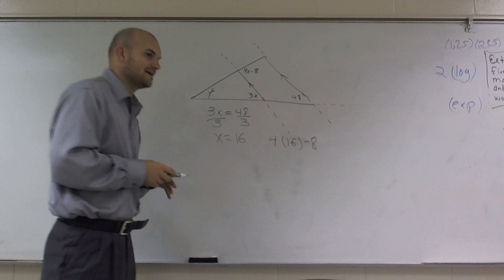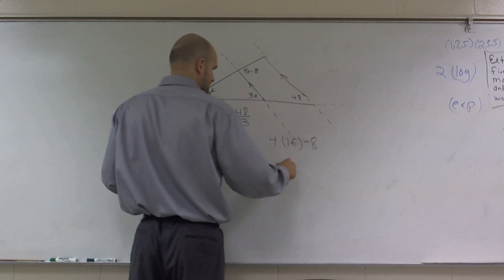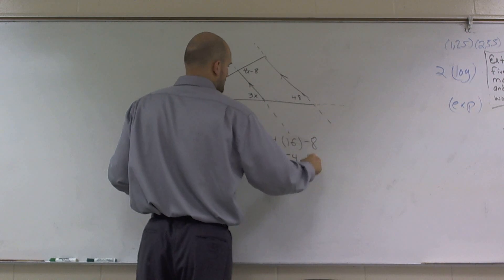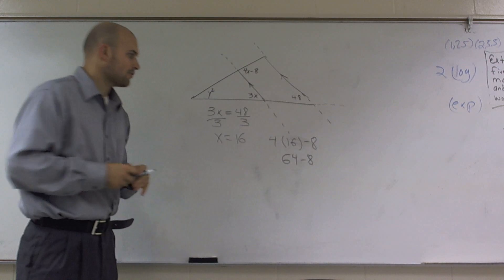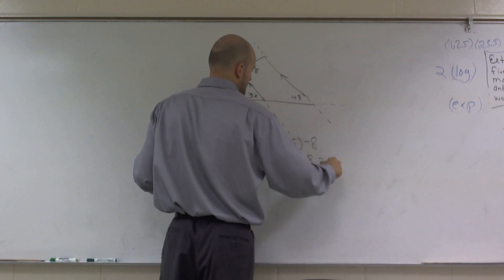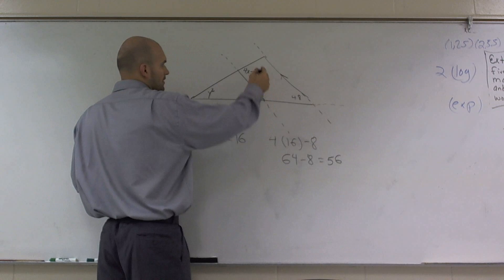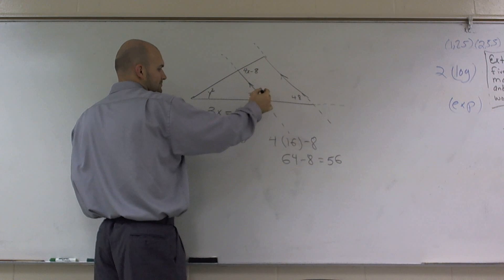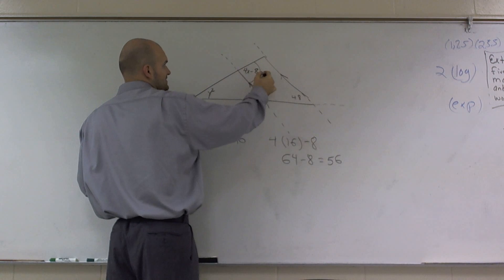Well, so 4 times 16 is going to be 64 minus 8. 64 minus 8 is going to give me 56. So therefore, this whole angle right here is 56.